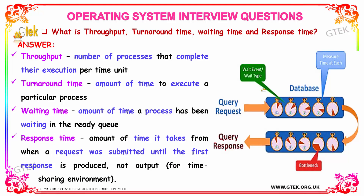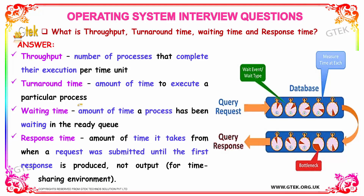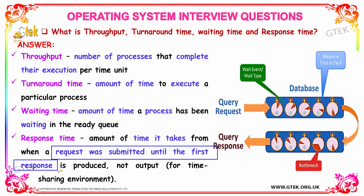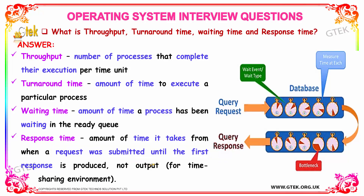What is throughput, turnaround time, waiting time, and response time? Throughput is the number of processes that complete their execution per unit time. Turnaround time is the amount of time to execute a particular process. Waiting time is the amount of time a process has to wait in the ready queue. Response time is the amount of time from when a request is submitted until the first response is produced — not the output, but the response.